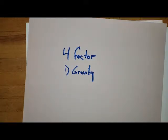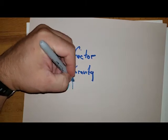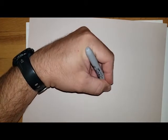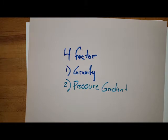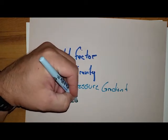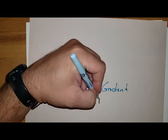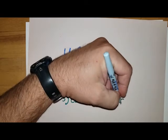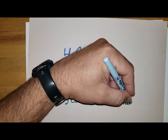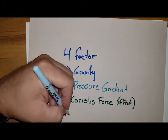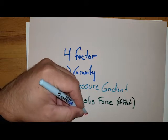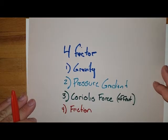The other three factors we want to look at are: pressure gradient — that's the difference between a high pressure and a low pressure; Coriolis force, sometimes called Coriolis effect; and the last one that will be affecting movement is friction. So those are our four factors of primary circulation.